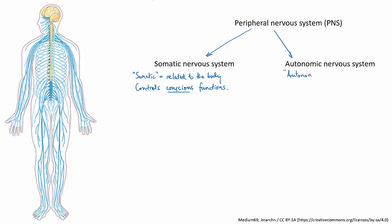Autonomic means self-governing — think of the word autonomy or autonomous. This part of the PNS executes all the commands that are done unconsciously. As you eat your sandwich, the autonomic nervous system is sending signals to your digestive system, increasing the production of saliva and digestive acids, increasing the movements of your stomach and intestines, and increasing blood flow to your intestines to help absorb the nutrients from your food.